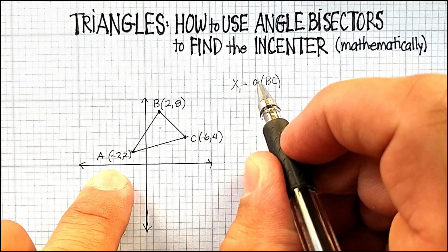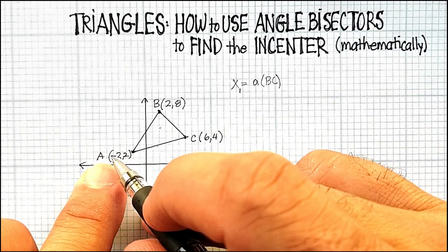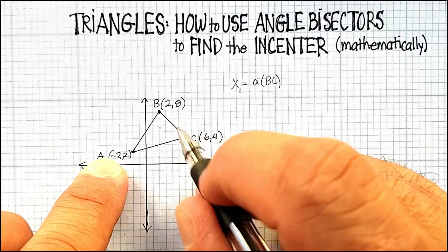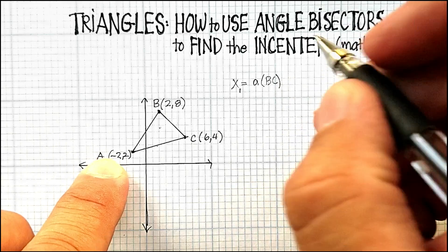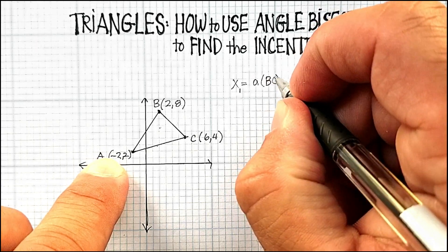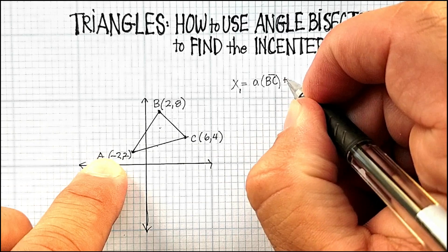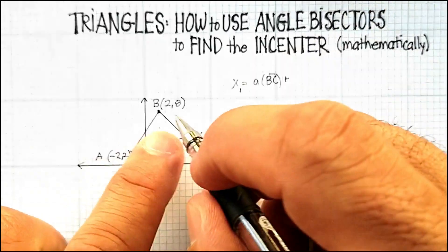So that is, again, it's the a value here, the x value here, times the length of the opposite side, so times BC, in this case line segment BC, plus, we'll call this b, small b, the x value there.